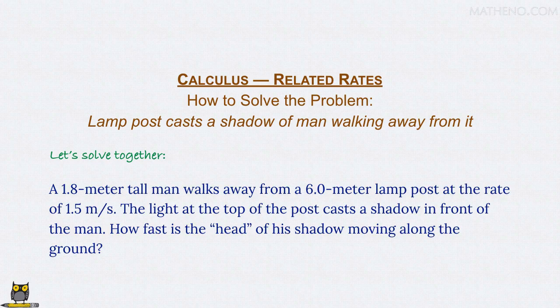A 1.8 meter tall man walks away from a 6.0 meter lamp post at the rate of 1.5 meters per second. The light at the top of the post casts a shadow in front of the man. How fast is the head of his shadow moving along the ground?